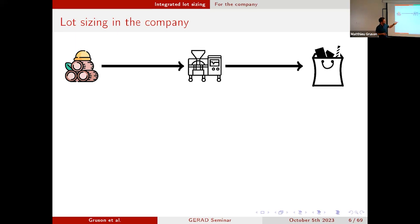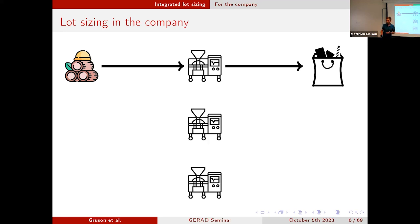Maybe we don't have just one machine able to process the different raw materials — maybe we have several machines. Then we would have a lot sizing part and also an assignment of lot sizing decisions to machines: which machine is going to produce the different items. So these are two different decisions — hence the first possibility for integrated lot sizing.